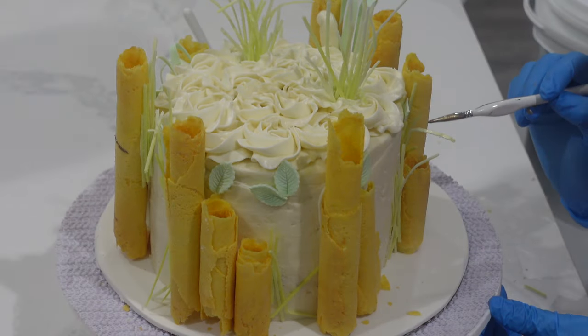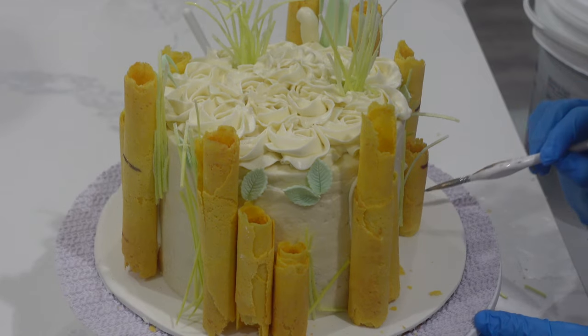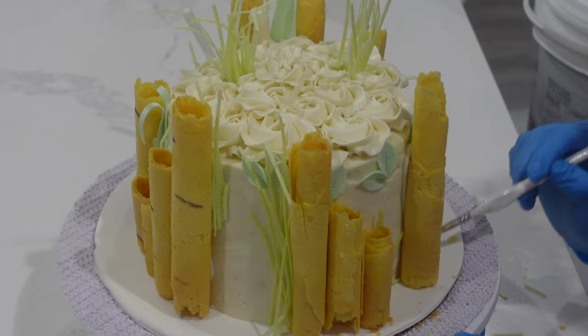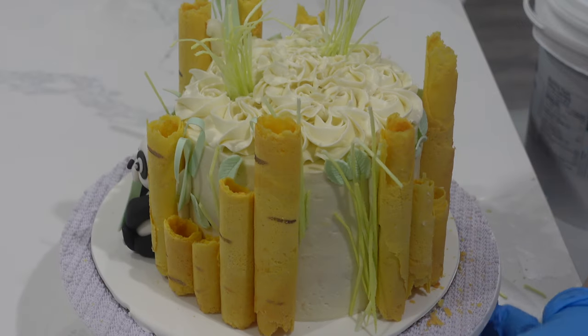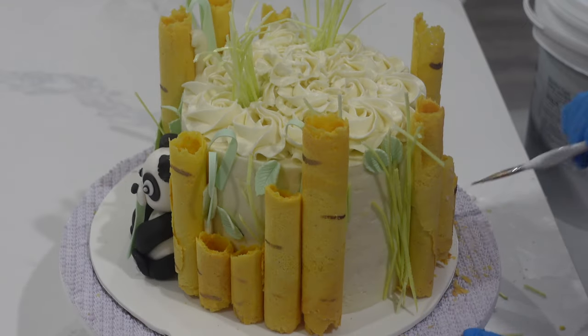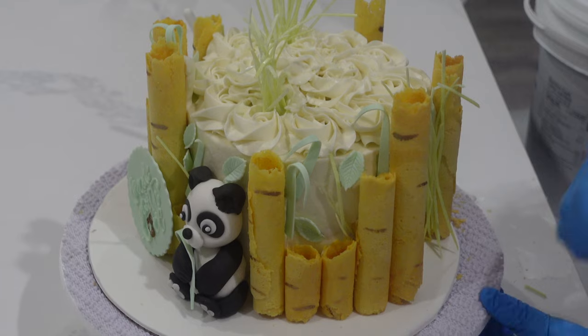Now this part was super satisfying. I took a little bit of bronzy gold luster dust, mixed it with some vodka, but you can use lemon extract if you prefer instead. And then I placed it onto the sides of these egg rolls. And notice how quick and haphazard I'm being. The key here is to make sure that it doesn't look too perfect, but do keep your lines horizontal.